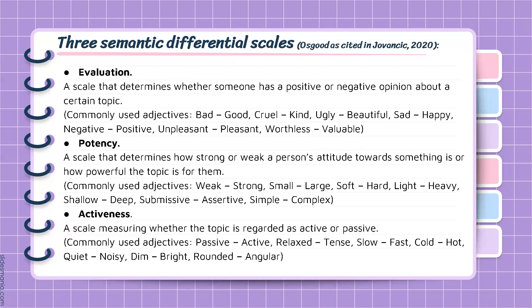Potency scale, on the other hand, determines how strong or weak a person's attitude towards something is, or how powerful the topic is for them. Commonly used adjectives are: weak/strong, small/large, soft/hard, light/heavy, shallow/deep, submissive/assertive, and simple/complex.